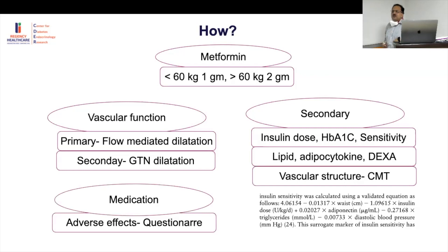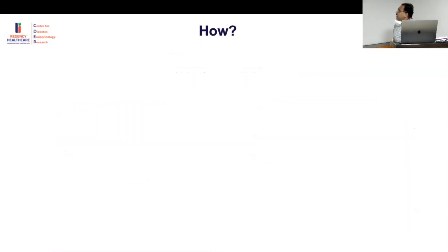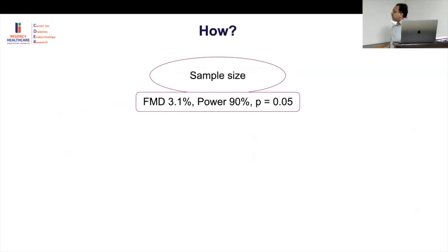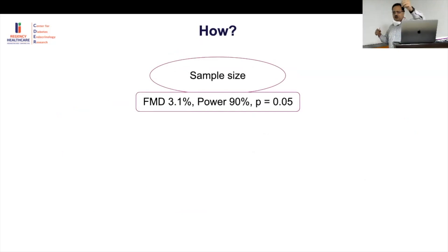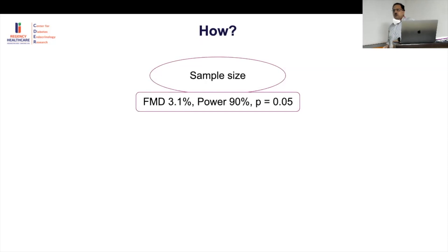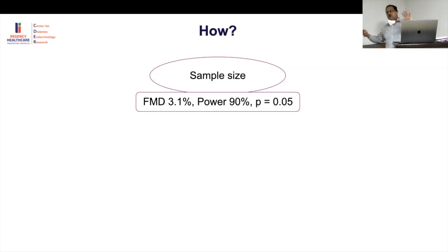They tracked adherence, adverse effects, and compliance. Sample size was calculated for the primary outcome — flow-mediated dilatation — assuming a detectable difference of 3.1%, with 90% power and a significance level of 0.05.